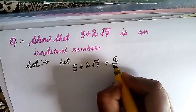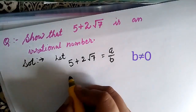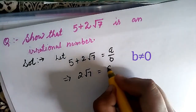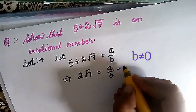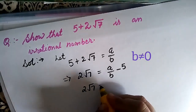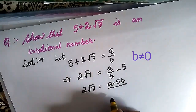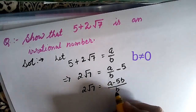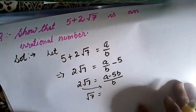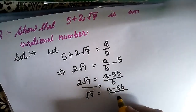Let us take this complete number equal to a/b — that is, assume it is a rational number where b ≠ 0. From here we have to find out the value of the irrational part, that is √7. Taking 5 to the right side: 2√7 = a/b − 5. Taking LCM: 2√7 = (a − 5b)/b. Therefore, √7 = (a − 5b) / 2b.